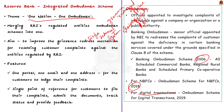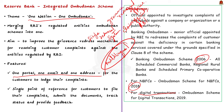The features of the scheme include one portal, one email, and one address for consumers to file complaints. There will be a single point of reference for consumers to file complaints, submit documents, track status, and provide feedback. Additionally, a multilingual toll-free number will be provided for relevant information on grievance redressal and assistance in filing complaints.